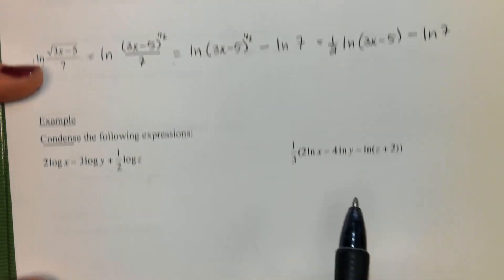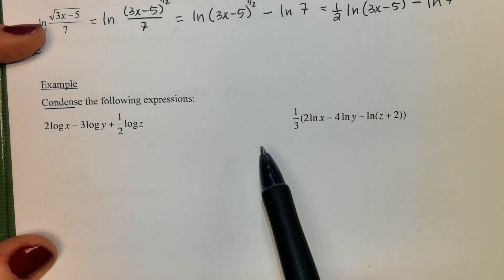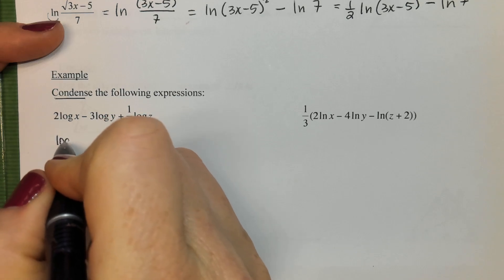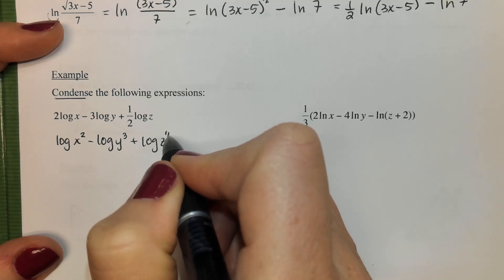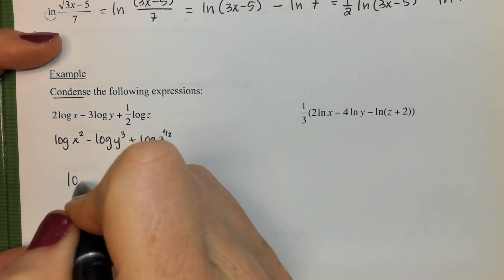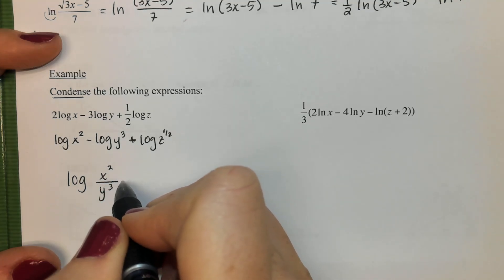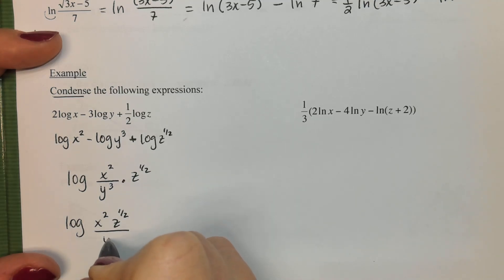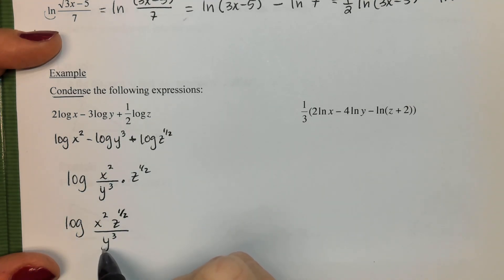So now we're going to condense. This is the reverse. Instead of me giving you this form and you spreading it all out, now I've spread it all out for you. I would like you to put it back together into one log. So first any numbers in front I'm going to put back as a power, as an exponent. And then I'm going to turn subtraction into a fraction. And addition is multiplication. So you could write this, or you could also write this. Since that z is really over a one, it could go up with the x value. So anything you're subtracting goes in the denominator, it makes that fraction. Anything that is positive or is being added would go to the numerator.